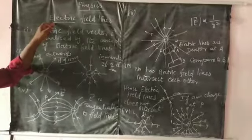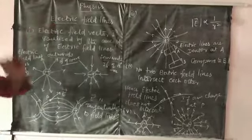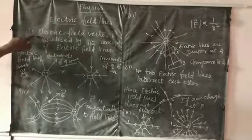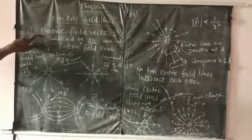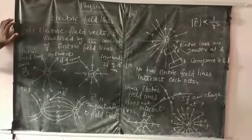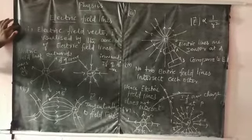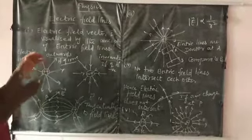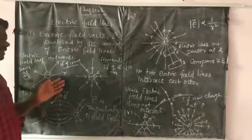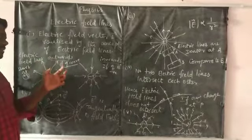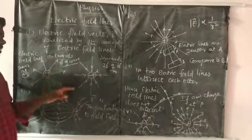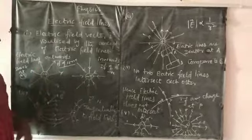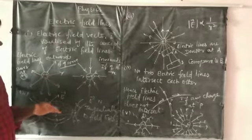We are going to discuss the properties of electric field lines. The electric field vectors are visualized by the concept of electric field lines. When electric field vectors are drawn upon the field lines around a charge, they are called electric field lines.